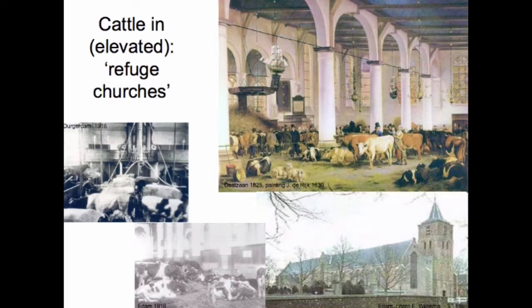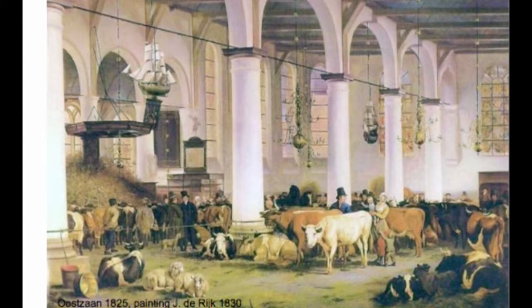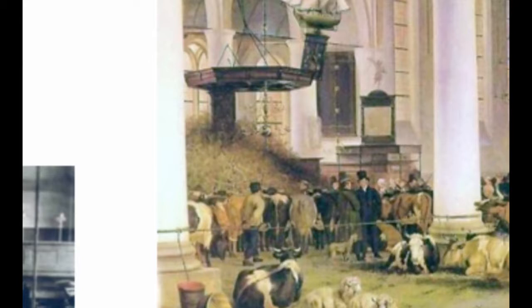The same type of rescue strategy would apply to cattle. The place to bring your cattle was a church. Churches were typically situated at the most elevated places of a village, and they were often the only large public buildings. From the 1600s onwards there were even churches being built explicitly as refuge churches. This is the church of Edam, 1622, built as a refuge church. It's a very small town — perhaps a few thousand inhabitants — but this church is as big as a cathedral, so both the inhabitants and their cattle could fit inside. This part of the church was used for storing hay for the cattle.